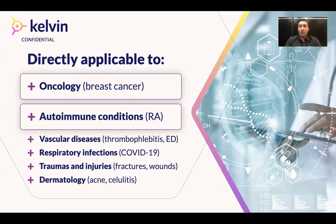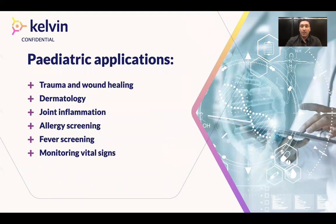This is directly applicable to various types of conditions. Of course, not every condition has a significant thermal footprint, but there are very important cases like breast cancer in the context of oncology, autoimmune diseases related to inflammation, various types of skin inflammations in the context of dermatology, and traumatology that can be spotted using our thermal imaging approach. This is also very important in the context of pediatric care, because it's important not to expose kids to any invasive or radiation-based methods for monitoring their condition.